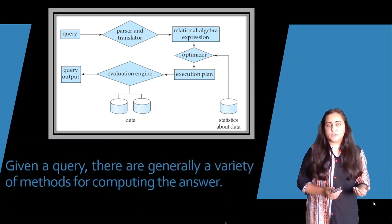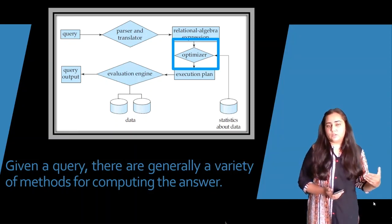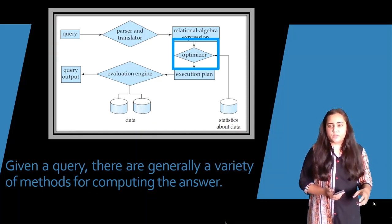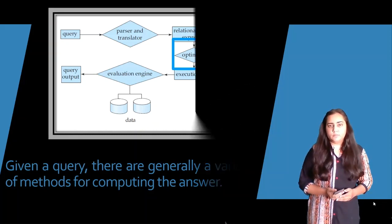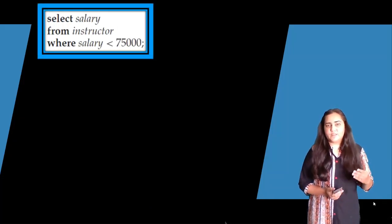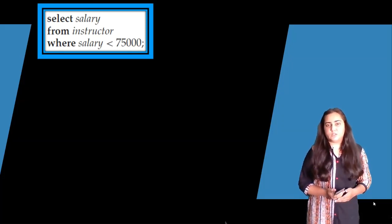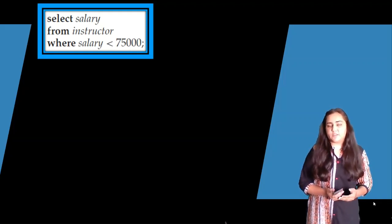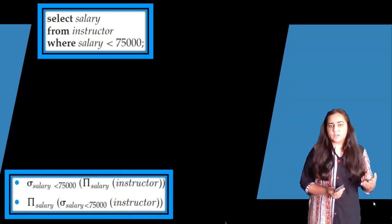Now let's consider the optimization phase. There is a variety of methods of computing the answer to a given query — although the output is one, there are many paths to get there. For example, consider this SQL query: SELECT salary FROM instructor WHERE salary < 75000. If I want to convert it into a relational algebra expression, I have two choices.